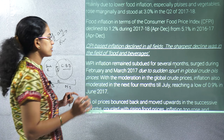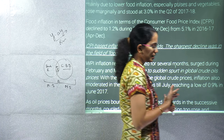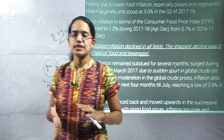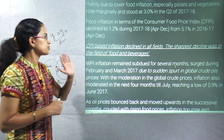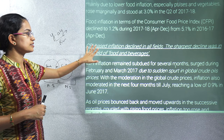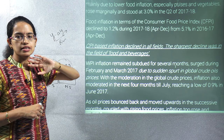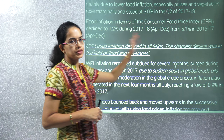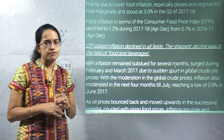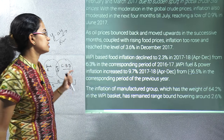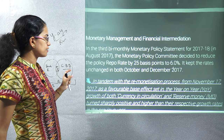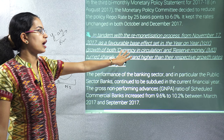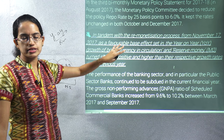We talk about the WPI — Wholesale Price Index — and CPI — Consumer Price Index. Consumer price-based inflation has declined in nearly all fields, but the sharpest decline has been witnessed in foods and beverages. The extremities of each are very important to understand. Remonetization has brought a favorable effect on year-to-year growth and the reserve money ratio.